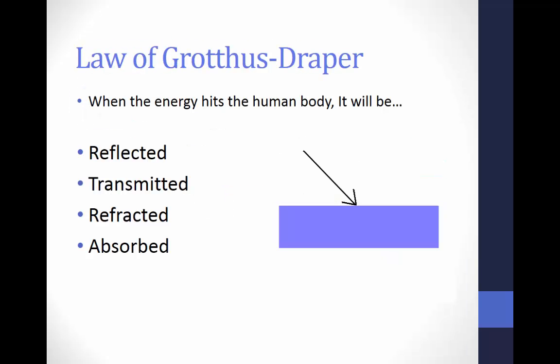The Grotthuss-Draper law, also called the principle of photochemical activation, states that there is an inverse relationship between the amount of penetration and absorption. The more energy that is absorbed by the superficial tissues, the less that remains to be transmitted to underlying tissues. Energy that is absorbed by one tissue layer cannot be transmitted to deeper layers. This means that the applied energy must be able to affect the target tissue to be effective as a treatment modality. Using a superficial heating or cooling agent for a deep injury affects only the superficial sensory nerves and blood vessels, but does not produce the needed metabolic change for the traumatized tissue if it is deep.